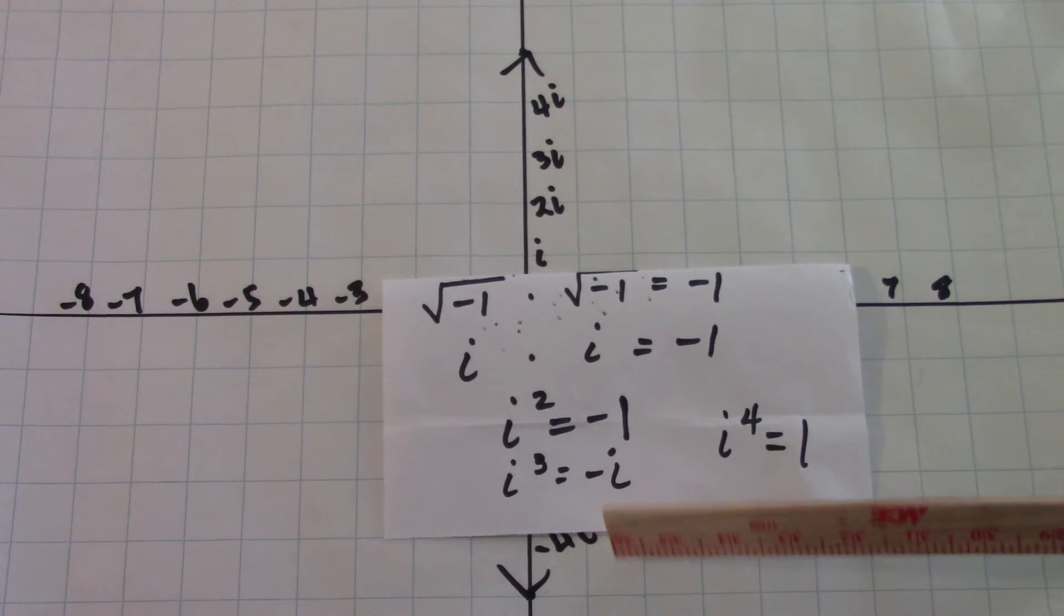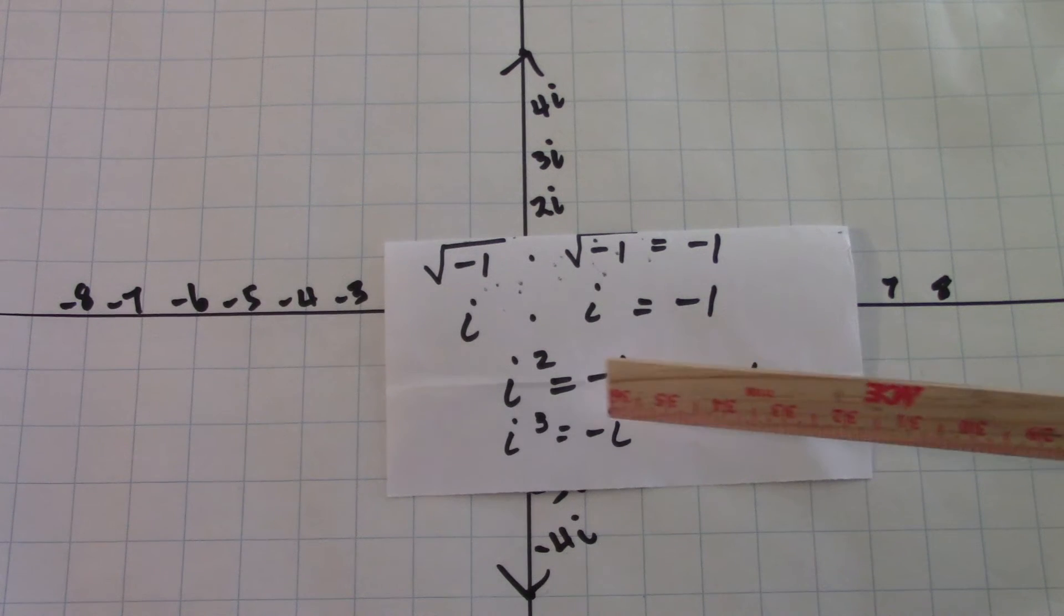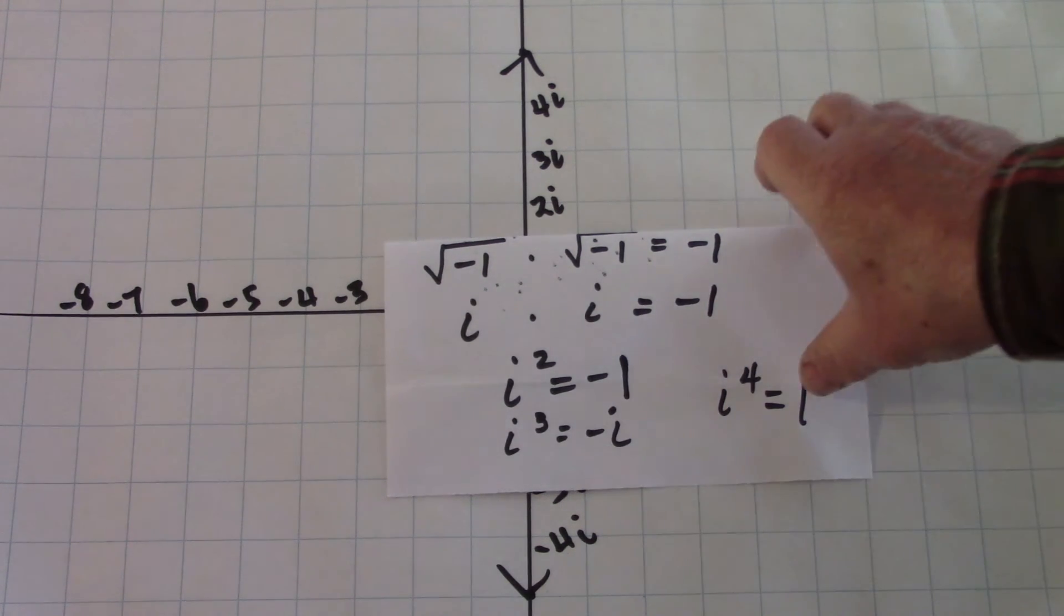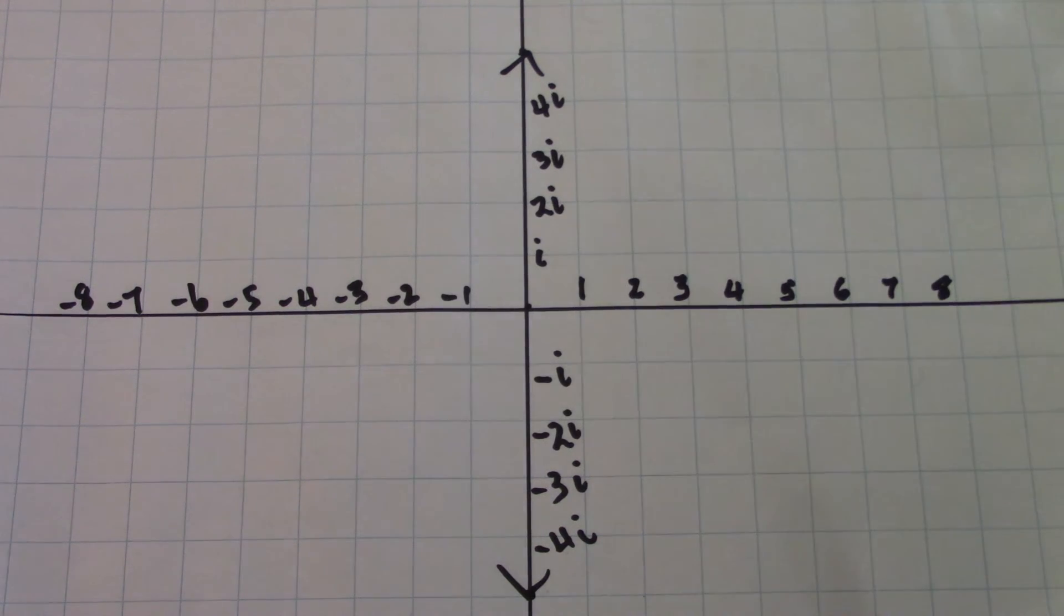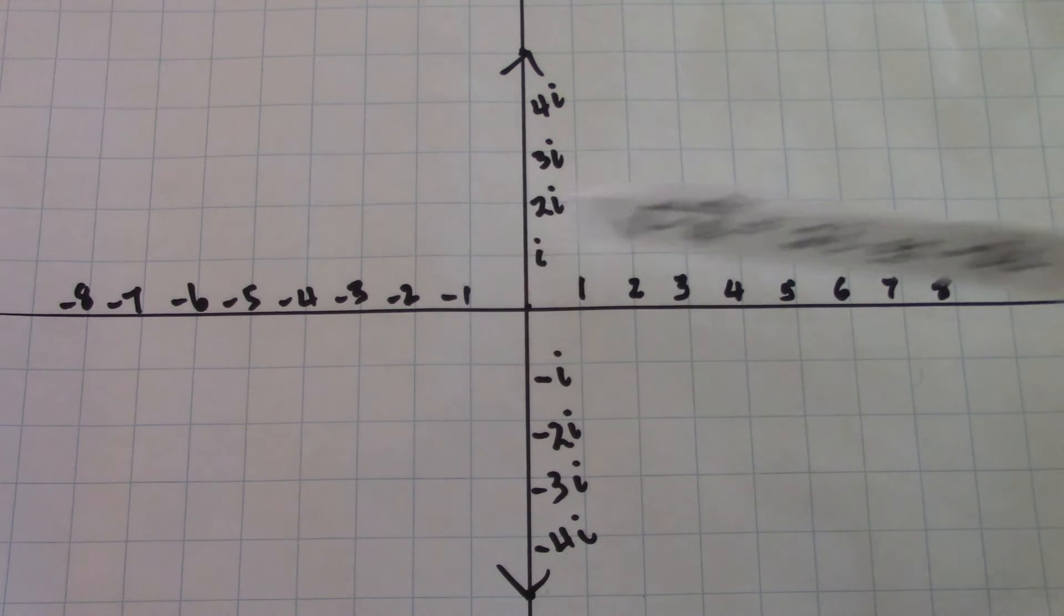And using the same reasoning, we can discern that i to the third power is negative i, and i to the fourth power is positive one. Now, I know that the square root of negative four is minus two i, or plus two i. So I have an answer for something that was told couldn't be done.